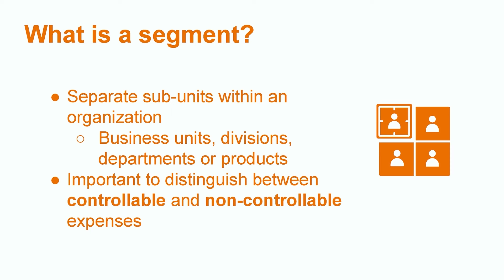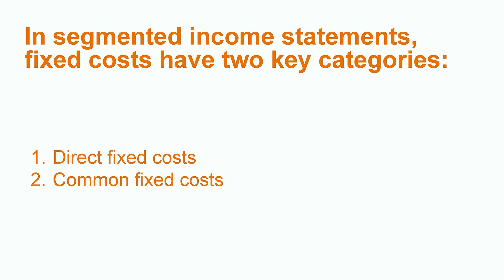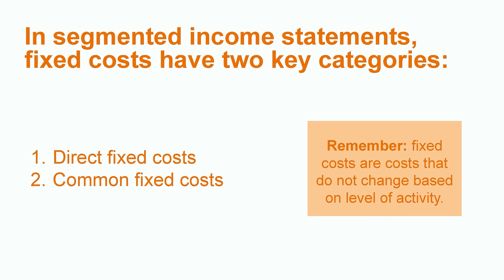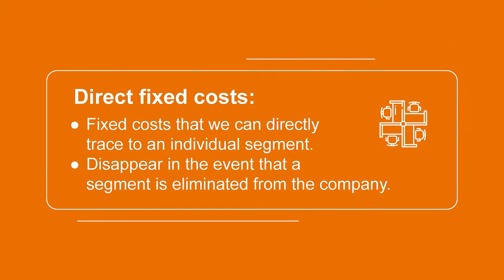Since managers use the segmented income statement to evaluate the performance of each segment, it's important to be able to distinguish between controllable and non-controllable expenses. In segmented income statements, fixed costs are separated into two key categories: direct fixed costs and common fixed costs. We know that fixed costs are costs that do not change based on the level of activity — a good example is rent or salaries. Direct fixed costs specifically refer to fixed costs that we can directly trace to an individual segment. For example, if the segments were divisions of a business, a direct fixed cost for each division would be the rent for each division's office space and the salaries for the manager of each division.